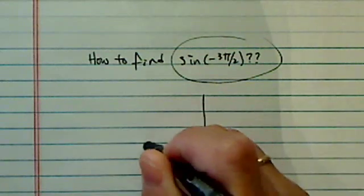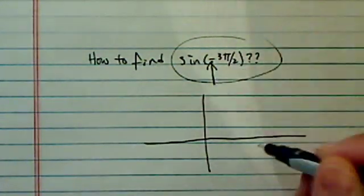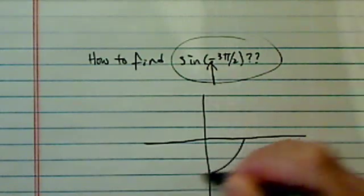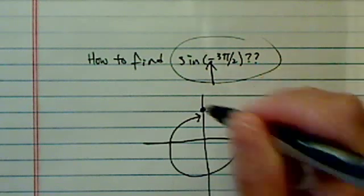Well, first of all, let's draw this angle and find out where it is. Minus means we're going to go clockwise, so this is pi, and then again, another pi over 2, so we end up at 90 degrees.